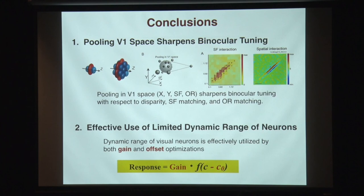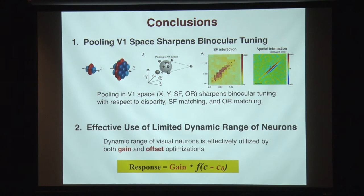So let's summarize. What I showed you was that pooling in V1 space — in this four-dimensional sphere — sharpens tuning in a way that CNN and AI literature usually doesn't do, because there's usually no columnar structure. But if you do that, you can really sharpen the tuning. That's in line with stereo acuity, which is at least ten times better than visual acuity in terms of angular features. The visual system also seems to use a limited dynamic range by gain changes and offset changes — both parameters are changed in actual neurons. Thank you very much.